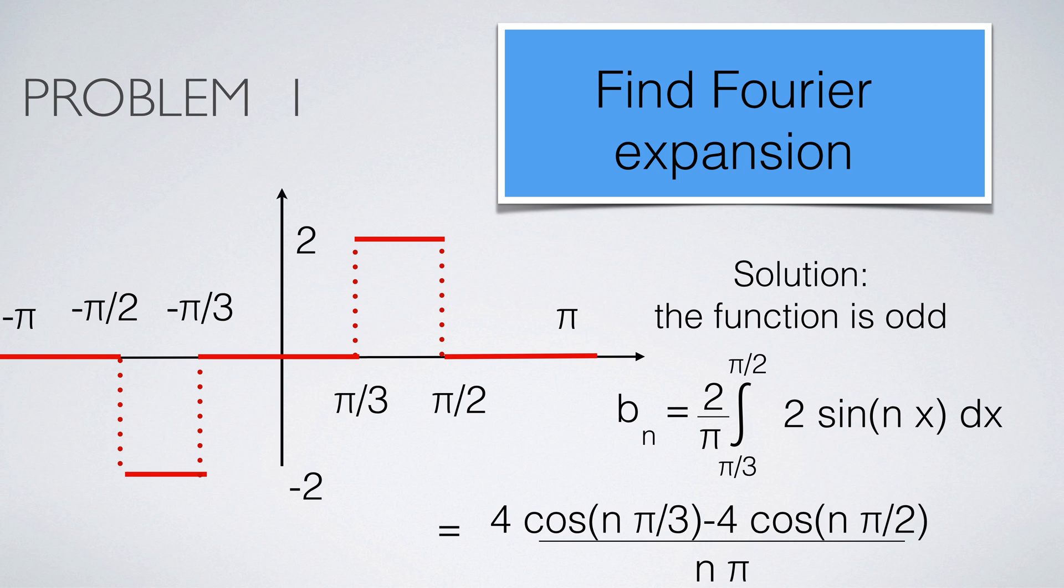Here is the first problem. Find the Fourier series of the function which is 2 on the interval from π/3 to π/2 and minus 2 from minus π/2 to minus π/3. We first note that the function is odd. We only need to find the sine series. It is no problem to integrate.